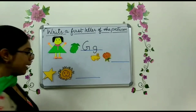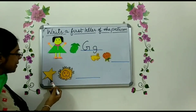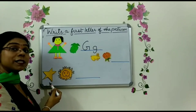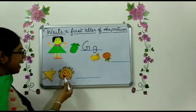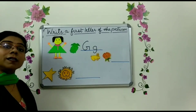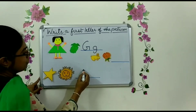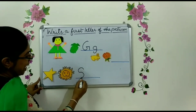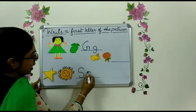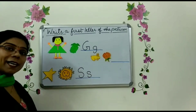Okay children, another picture. What is this? Yes, this is S for star. And this one? S for sun. So the first letter of the picture is S. S for star, S for sun.